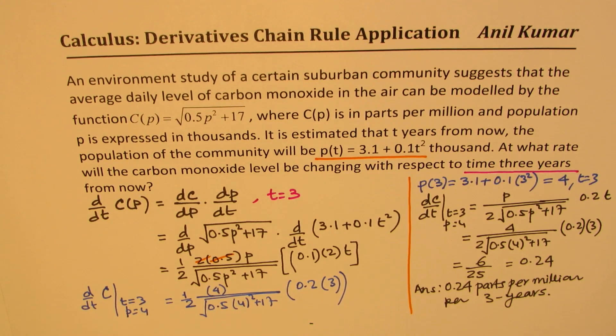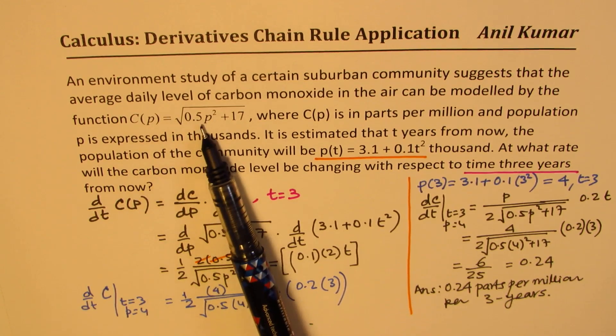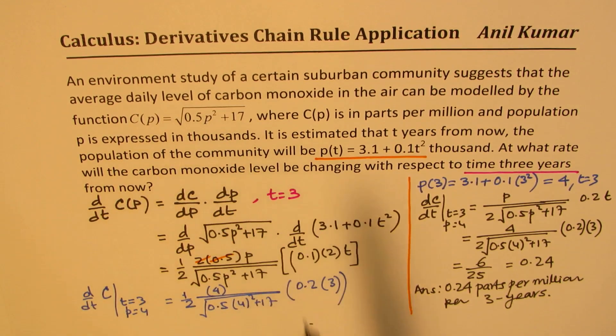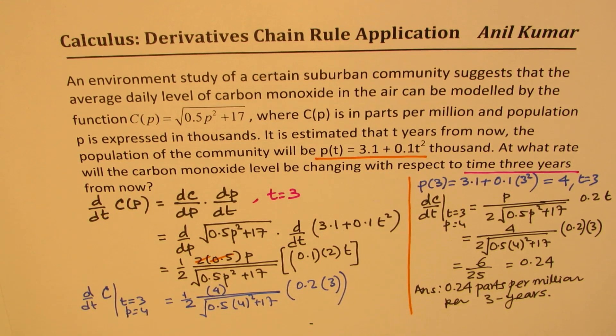So that is how you're going to solve it. So it is important to note that we have a function which is dependent on population. Population is dependent on time. And therefore, we could apply the chain rule and get our answer. So I hope that makes sense. Feel free to write your comment, share your views. And if you like and subscribe to my videos, that'd be great. Thanks for watching and all the best.